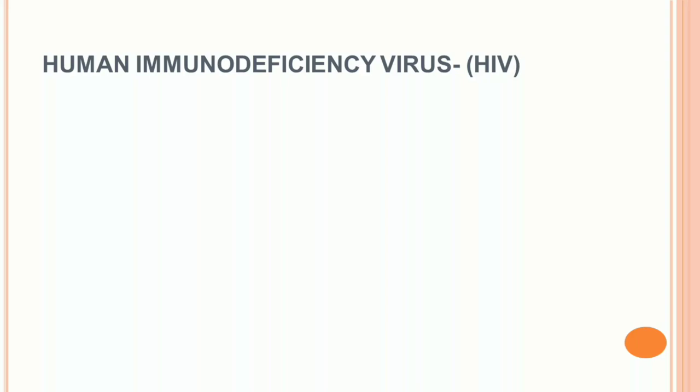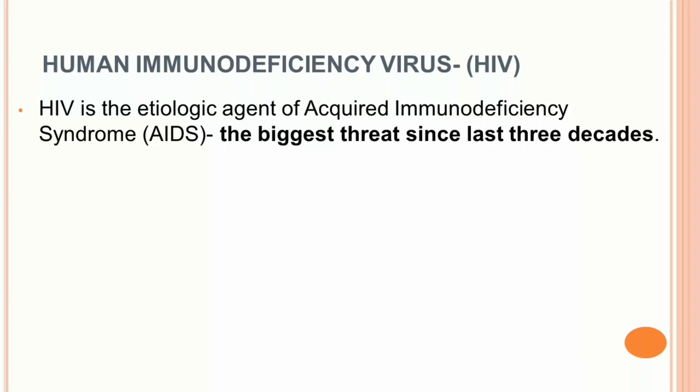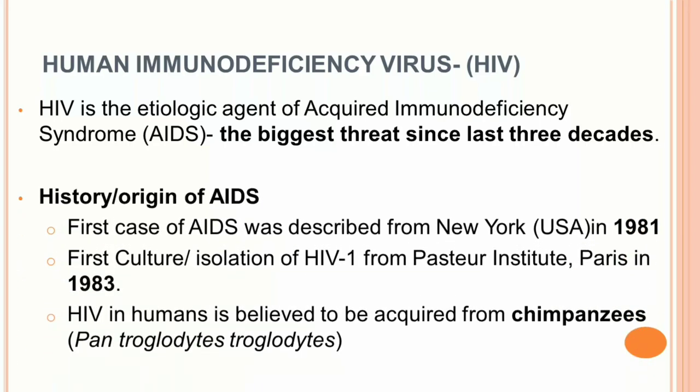HIV is the etiologic agent of Acquired Immunodeficiency Syndrome, commonly called AIDS, which is the biggest threat since the last three decades. Even though COVID-19 is the current problem we are facing, we should not forget other microorganisms problematic to humans — HIV is one of them. The first case of AIDS was described from New York, USA in 1981. The first isolation in vitro of HIV-1 was done at Pasteur Institute, Paris in 1983. HIV in humans is believed to be acquired from chimpanzees.